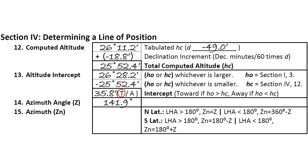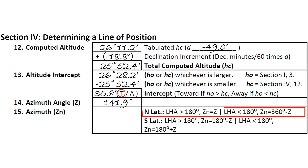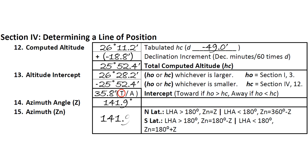Now we need to determine our azimuth, abbreviated Zn, using the rules listed here. In our example, we were in north latitude, and we had a local hour angle of 323 degrees, so we use this rule here. We see that our Zn is equal to our Z. We note this on the site reduction form.